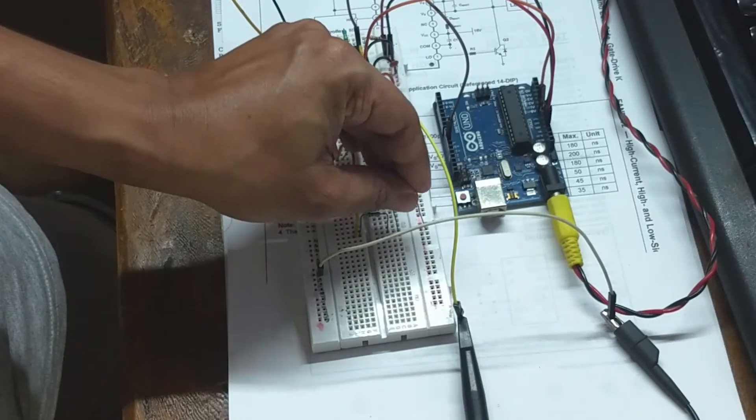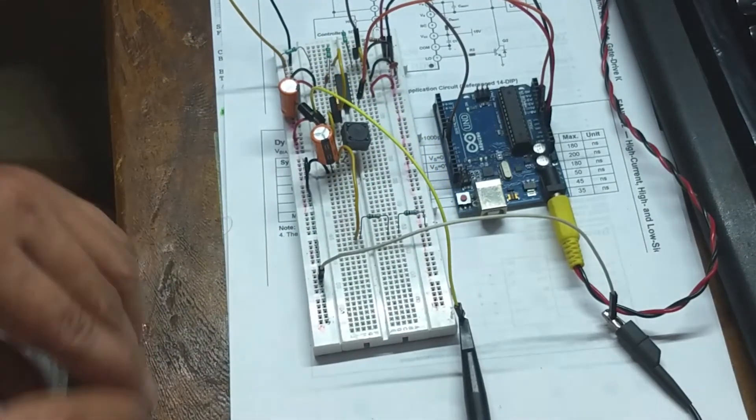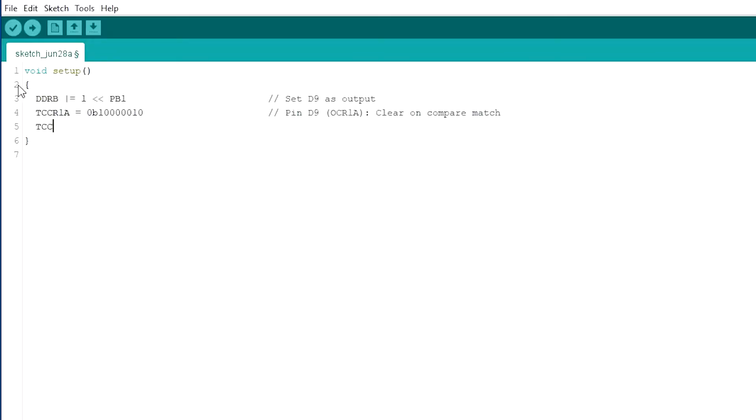Lastly, adding this 22 kilo ohm and 10 kilo ohm voltage divider to feedback the output voltage to the microcontroller. I am configuring timer 1 in fast PWM mode to generate the PWM signal in OSHI 1A pin or pin D9 in Arduino. Value loaded in the input capture register ICR to get the switching frequency of 40 kilohertz.